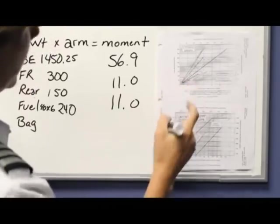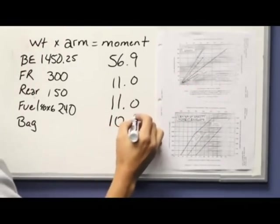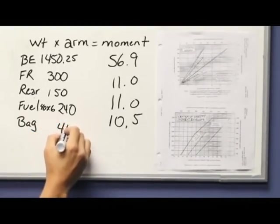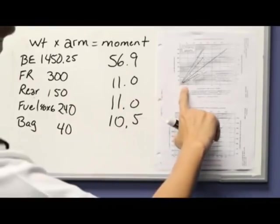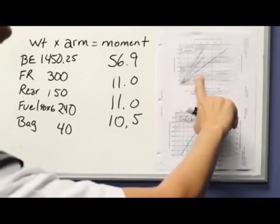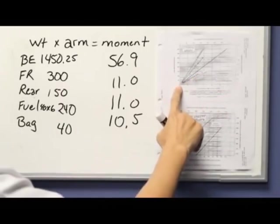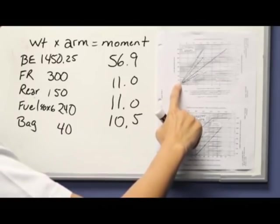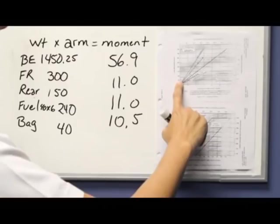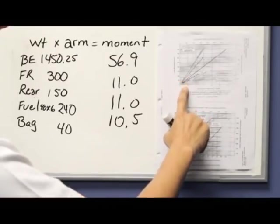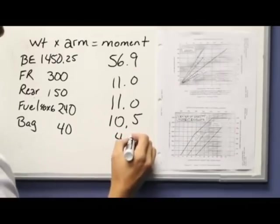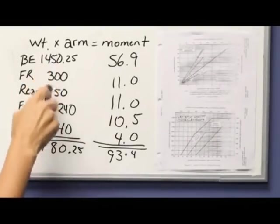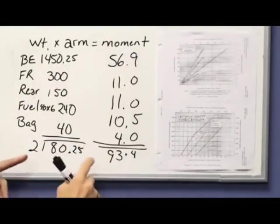Finally, if there's any baggage—let's say that we had, I don't know, 40 pounds of baggage—the baggage line is this one right here. So I go up to 40. You have to pay attention to how much each line is worth. If that's 50, each are worth 10. So I'll go to this line for 40, go across and drop down, and it looks like it's right about 4. Now I need to add these numbers up.